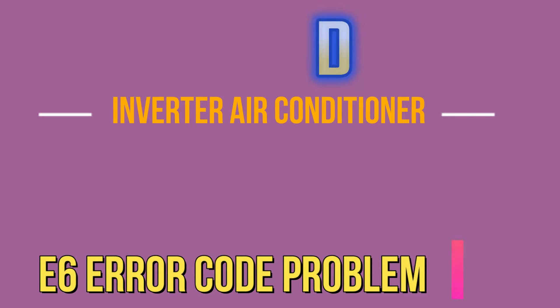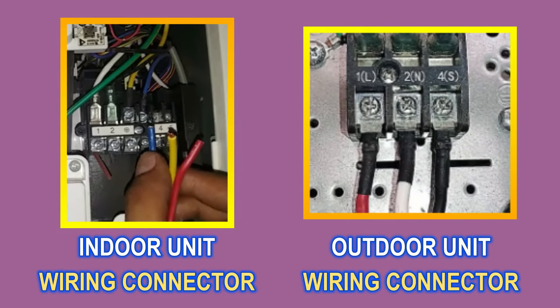This error can occur in your AC due to four reasons. The first reason may be the supply wire going to your indoor unit and outdoor unit. You should look at the connector of the indoor unit and the connector of the outdoor unit — there should be the same color code. If the same color code wire is not installed in the connectors, then you will get this error.